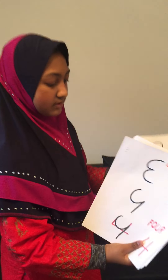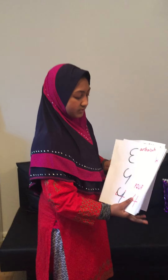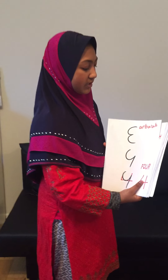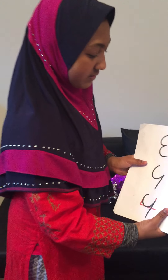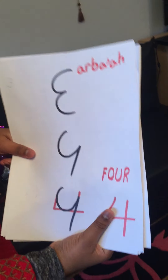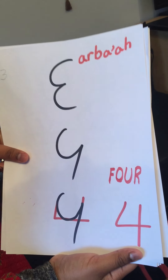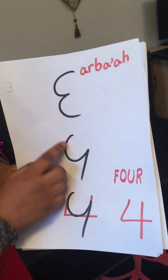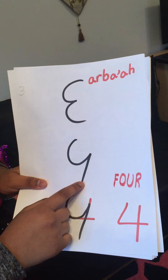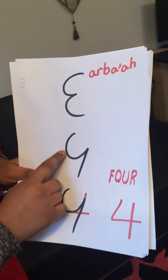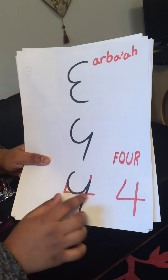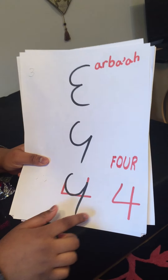Four in Arabic looks like this — another way round three — and it's called Arba'a. Some people still write it like this, but it's less common. Then they just added straight lines, and this is the four we have now.